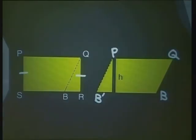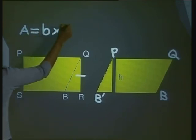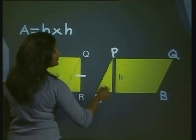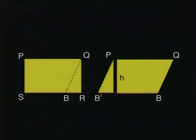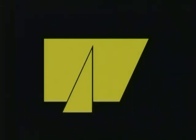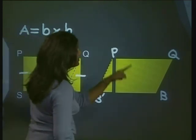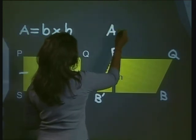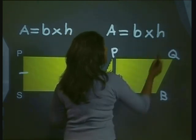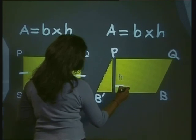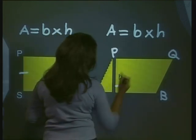So what is the formula for the area of a parallelogram? The formula for the area of a rectangle is area equals base times height. The area of the parallelogram should be the same — can you see that the base has not changed? All we did was move this piece, RB, to the other side. The height of the rectangle also hasn't changed. So the area of the parallelogram is area equals base times height, where the height is the perpendicular distance between the parallel sides PQ and BB'.